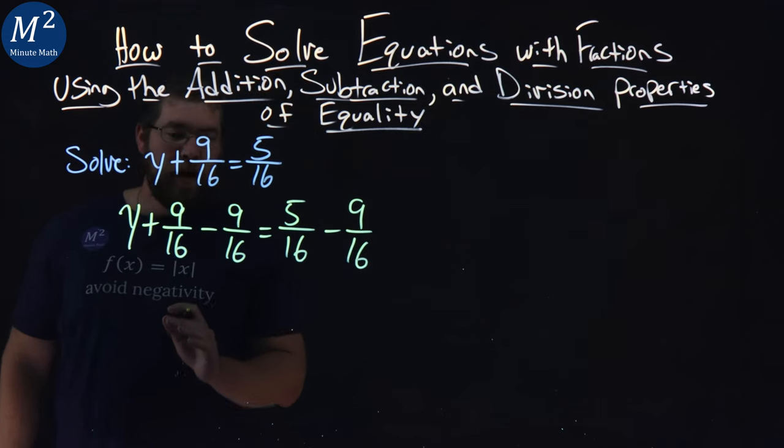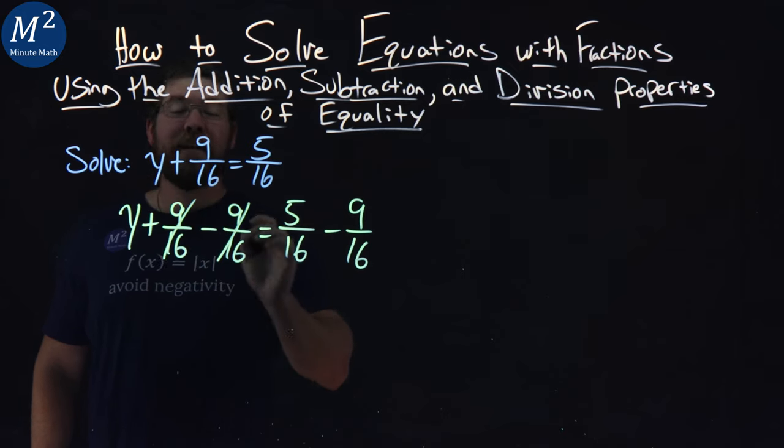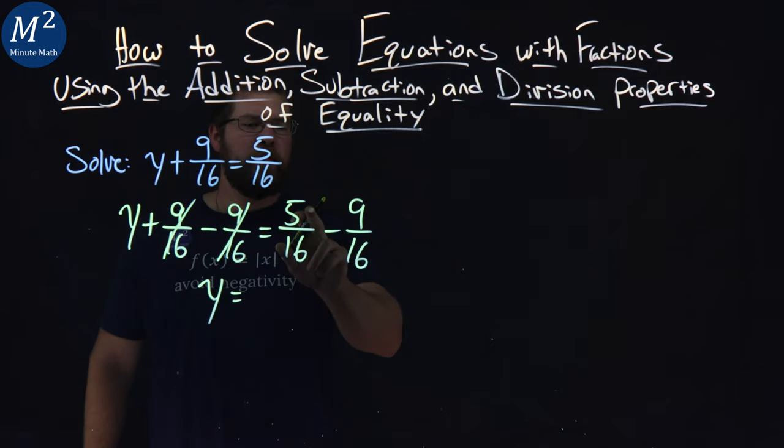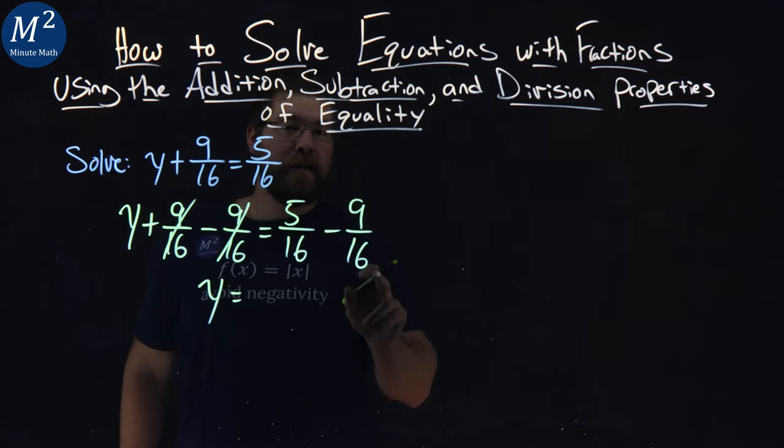Left-hand side, 9 16ths minus the 9 16ths, they cancel out. Leave me with y by itself. Now, 5 and 9, those are the numerators, right? We can subtract them directly because the denominator is the same at 16.